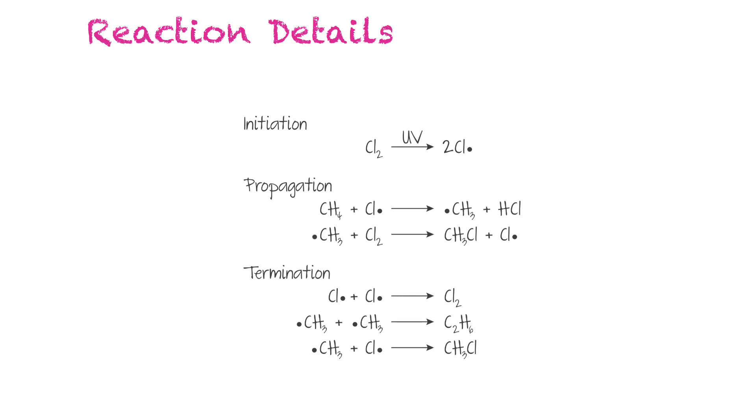So if you need to name an organic halide, which is what these products are, you consider the halogen atom as just a branch on the parent chain. So you would name it like you would name a branch. But you would shorten the name of the halogen to fluoro, chloro, bromo, or iodo. So in this example, it's chlorine that's attached. So this would be chloromethane.